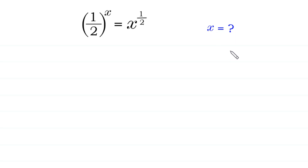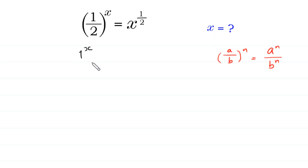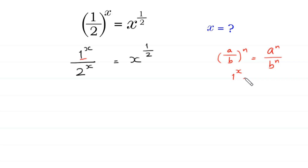According to this property of exponents, a over b whole to the power n is equal to a to the power n over b to the power n. We can write 1 over 2 to the power x as 1 to the power x over 2 to the power x, which is equal to x to the power 1 over 2. Since 1 to the power x equals 1, we have 1 divided by 2 to the power x is equal to x to the power 1 over 2.